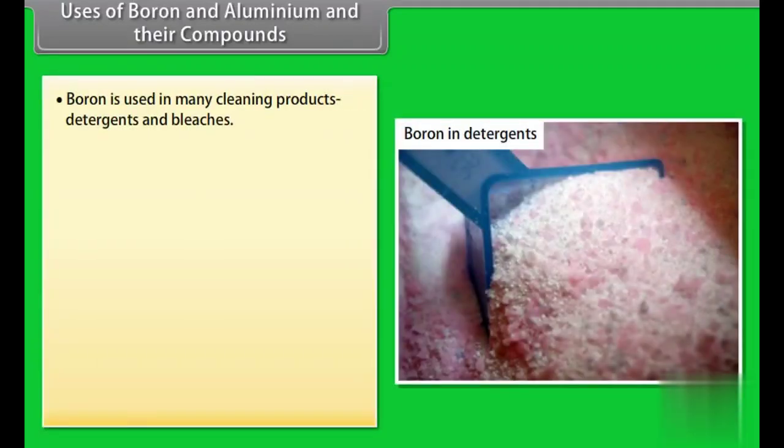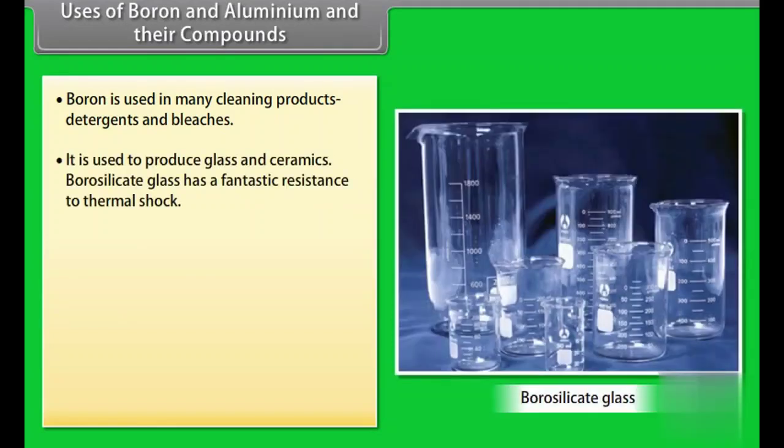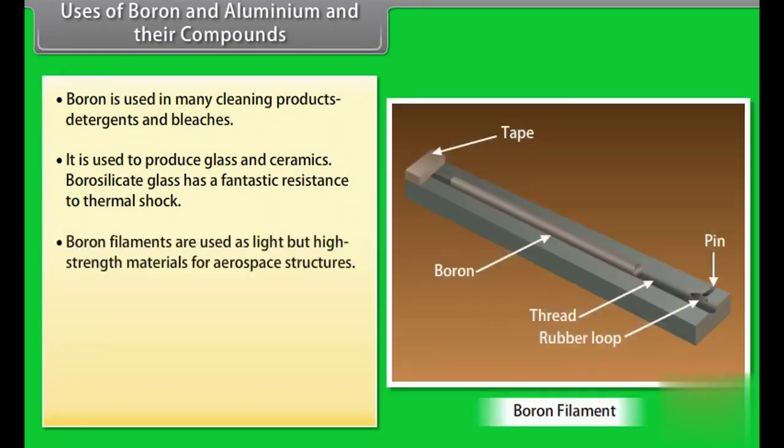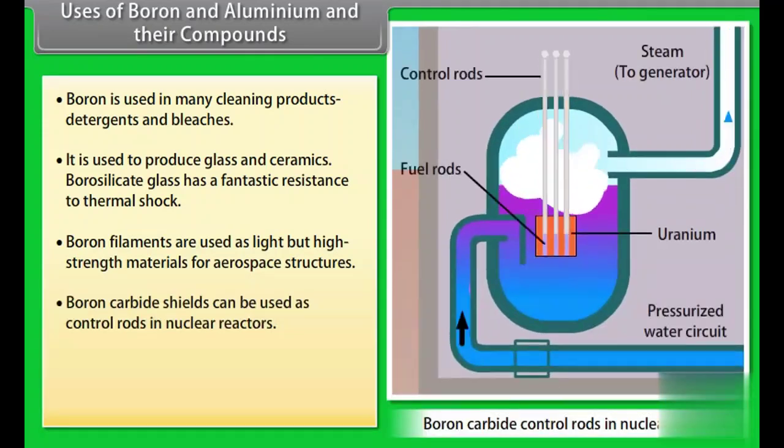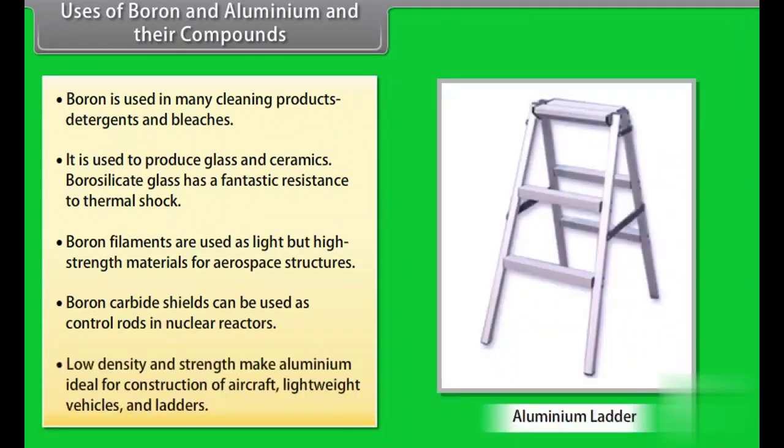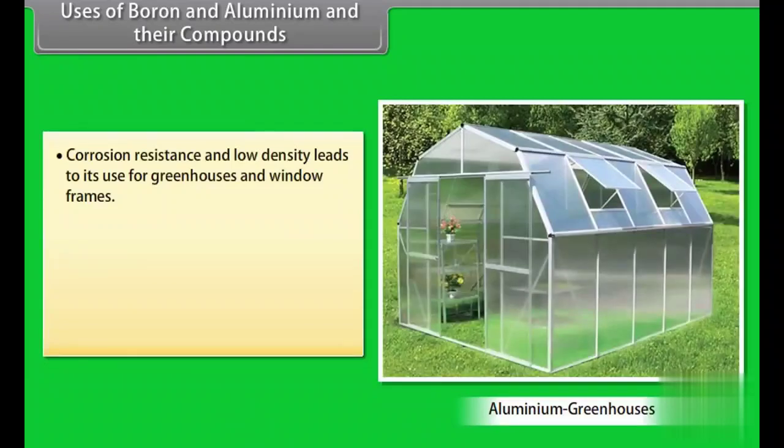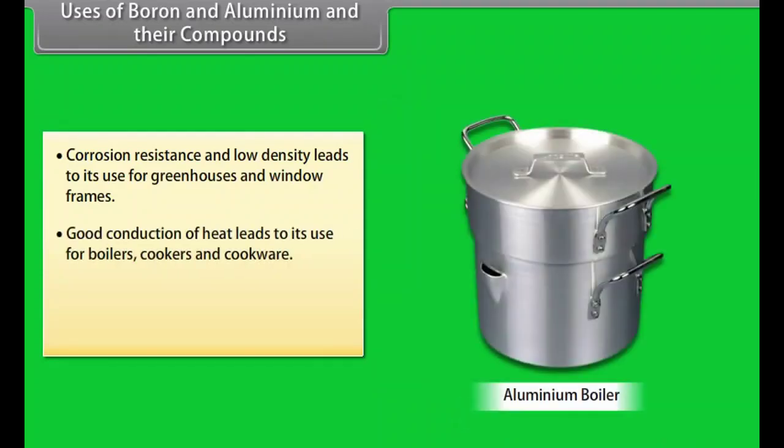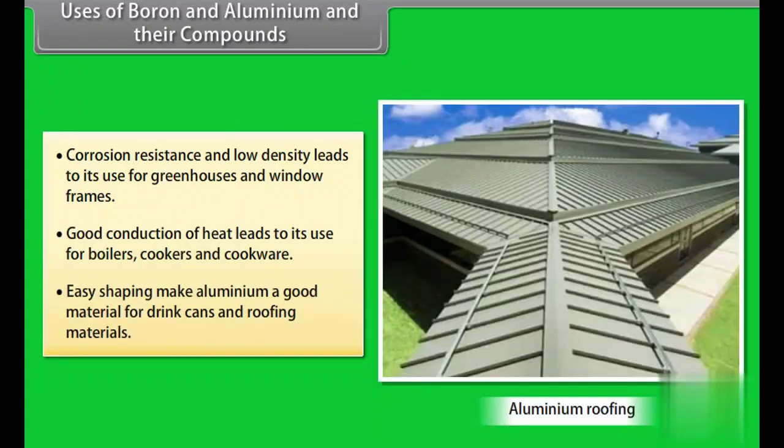Uses of boron and aluminium and their compounds. Boron is used in many cleaning products, detergents and bleaches. It is used to produce glass and ceramics. Borosilicate glass has fantastic resistance to thermal shock. Boron filaments are used as light but high strength material for aerospace structures. Boron carbide shields can be used as control rods in nuclear reactors. Low density and strength make aluminium ideal for construction of aircraft, lightweight vehicles and ladders. Corrosion resistance and low density leads to its use for greenhouses and window frames. Good conduction of heat leads to its use for boilers, cookers and cookware. Easy shaping makes aluminium a good material for drink cans and roofing materials.